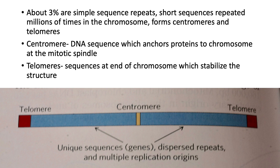With this strand of DNA, we have telomeres at either end, centromere in the center, and there are unique sequences in between which are the genes — they're dispersed repeats and multiple replication origins.